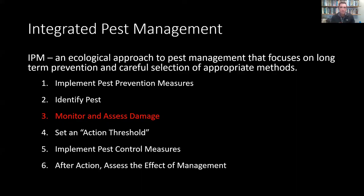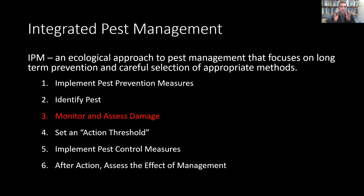Starting with step 3, we're going to be selective in our strategies. We're going to be tailoring everything we do according to decisions we arrived at in the previous step. Basically, if we have a solid identification, then the monitoring, the decision-making, and the controlling all become very specific, context-based, and targeted approaches. After you do step 2, it will look different every time, because you're narrowing down your range of possibilities to meet the appropriate control method for that pest.